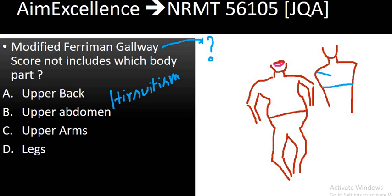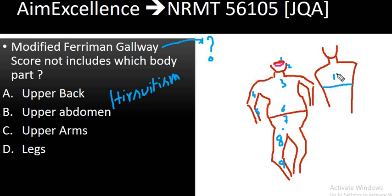So altogether, counting all areas, we have eleven parts in the original Ferryman-Galloway score: upper lip, chin, chest, upper abdomen, lower abdomen, thighs, legs, upper arm, forearm, upper back, and lower back. The scapula region is also marked.